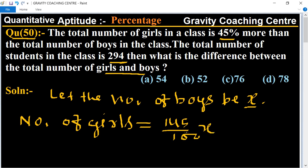45% more than the number of boys, so 145 upon 100x. Cancel by table of 5, 5 to 10, 9 equal to 29x upon 20, which is the number of girls.